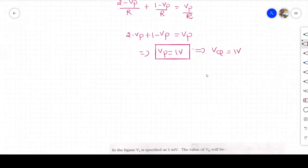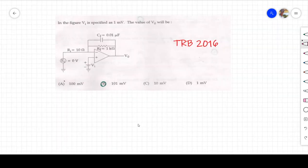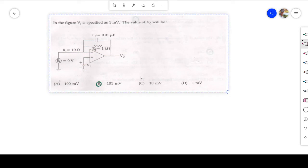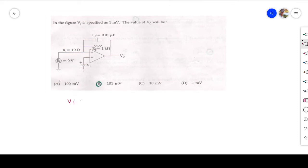Next, we see some other question. This question, they have asked in TRB 2016. What is the question? In the figure, V_I is specified as 1 millivolt. Input voltage is 1 millivolt. What is the value of output voltage? They ask what is the output voltage and they are given the diagram. Input is DC, it is not AC.